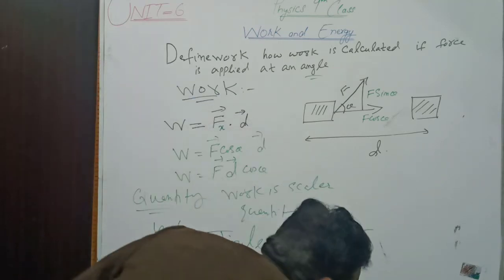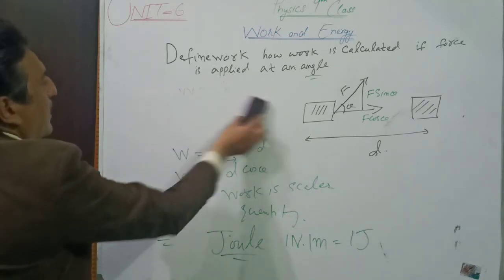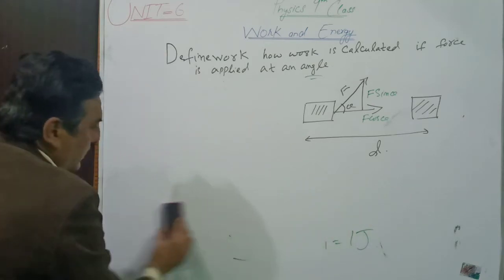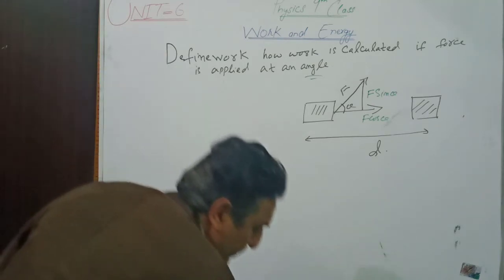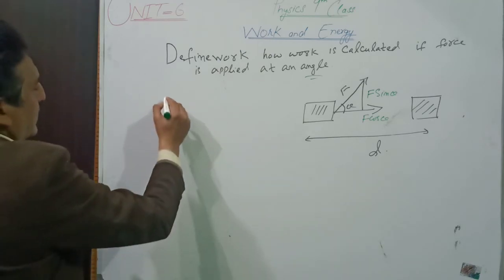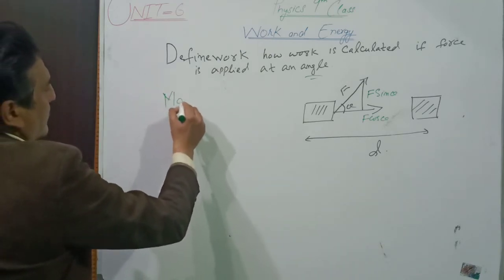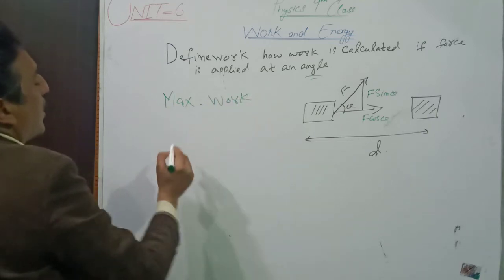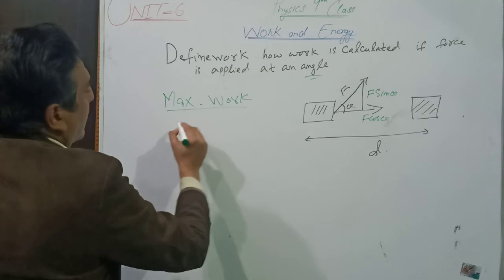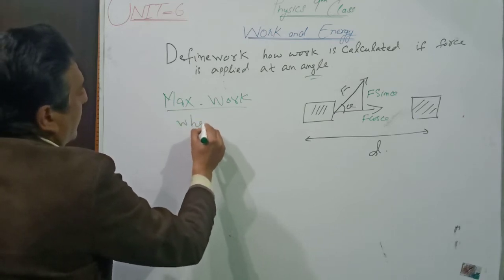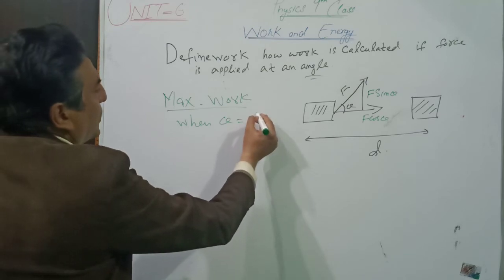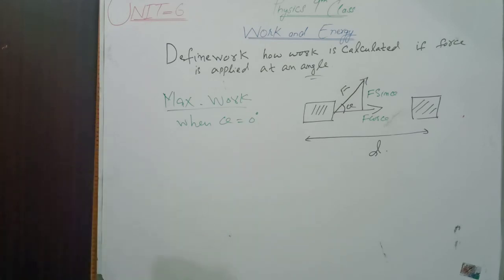Now we discuss maximum work and minimum work. Maximum work: when theta is equal to zero degrees, then work is maximum.